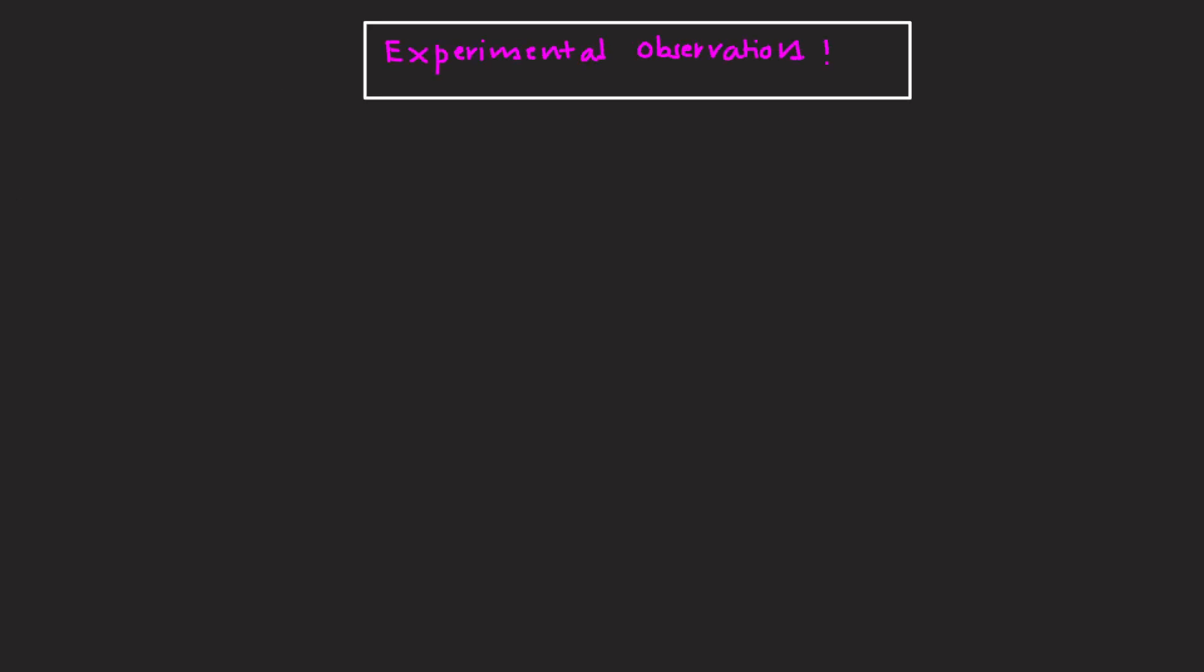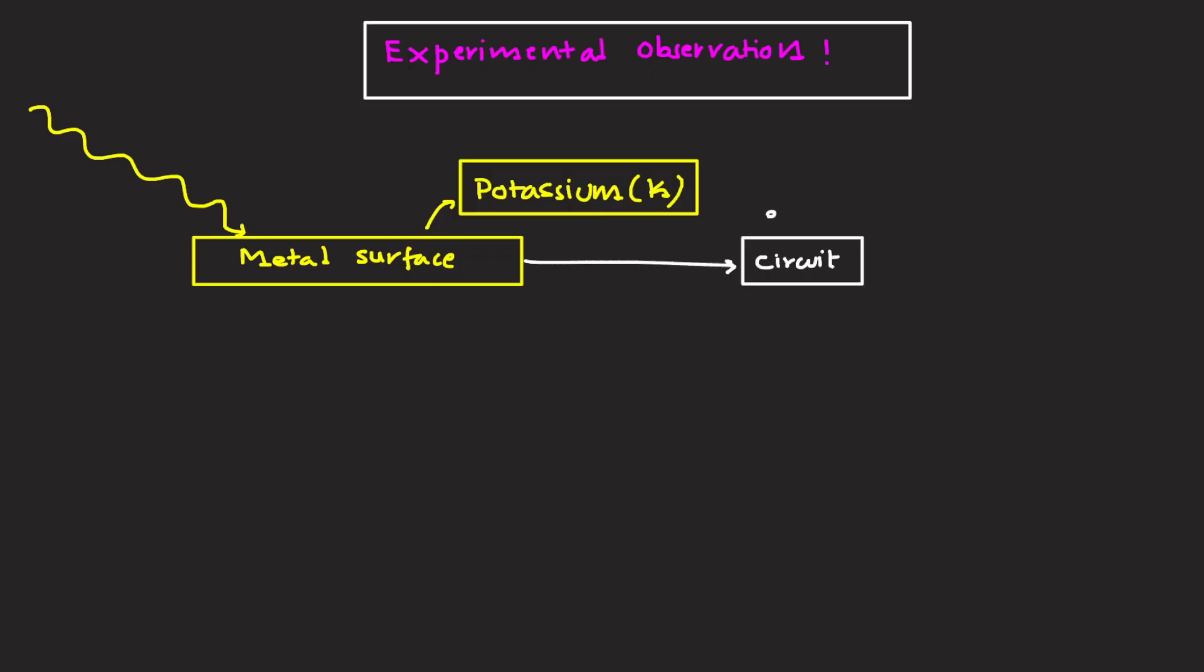Experimental observations. Imagine shining light on a clean metal surface, let's say potassium. You connect it to a circuit so that if electrons are ejected, a current will flow. And here is what was observed. First is instant emission. Electrons are ejected immediately when light of sufficient frequency falls. There is no time lag.